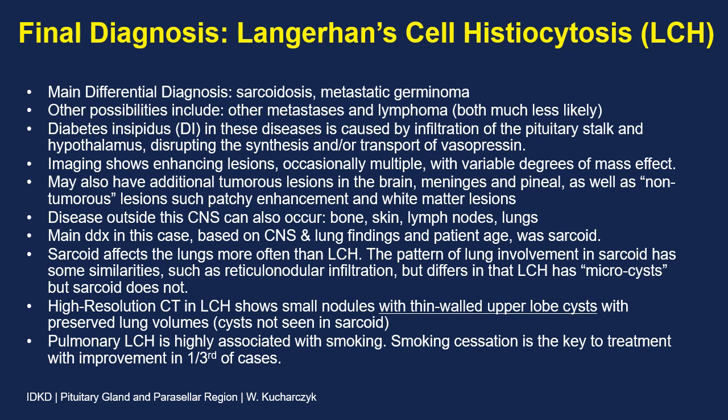LCH and sarcoid can affect multiple organs outside the central nervous system, including bone, skin, lymph nodes, and lungs. The main differential diagnosis in this case, based on the hypothalamic and lung involvement and the patient's age, was sarcoidosis. Sarcoid affects the lungs more often than LCH, but LCH also has microcysts, which does not occur in sarcoid. High-resolution CT in LCH shows small nodules with thin-walled upper lobe cysts with preserved lung volumes — these cysts are not seen in sarcoid. An interesting fact is that pulmonary LCH is highly associated with smoking, and smoking cessation is the key to treatment, with improvement in a third of cases if smoking can be stopped.